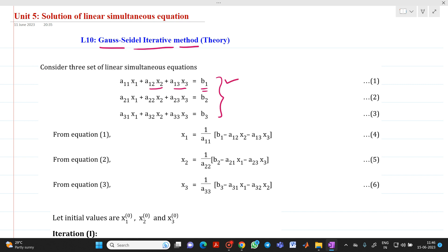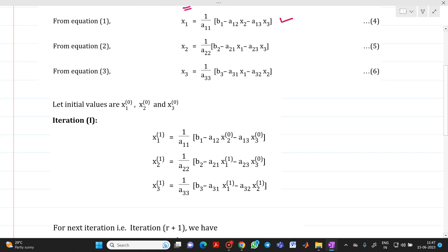Now from equation number 1 we have to write the equation for x1 which will be equal to 1 upon a11 times b1 minus a12x2 minus a13x3. From equation number 2 we have to write the equation for x2 which will be equal to 1 upon a22 into bracket b2 minus a21x1 minus a23x3. And similarly from equation number 3 we will be writing equation for x3 which is equal to 1 upon a33 into bracket b3 minus a31x1 minus a32x2. Let us assume that we have initial approximation x1 of 0 equal to x2 of 0 and x3 of 0 which is equal to 0. So this 0 indicates that this is your value of initial approximation. So how to find it out first iteration?